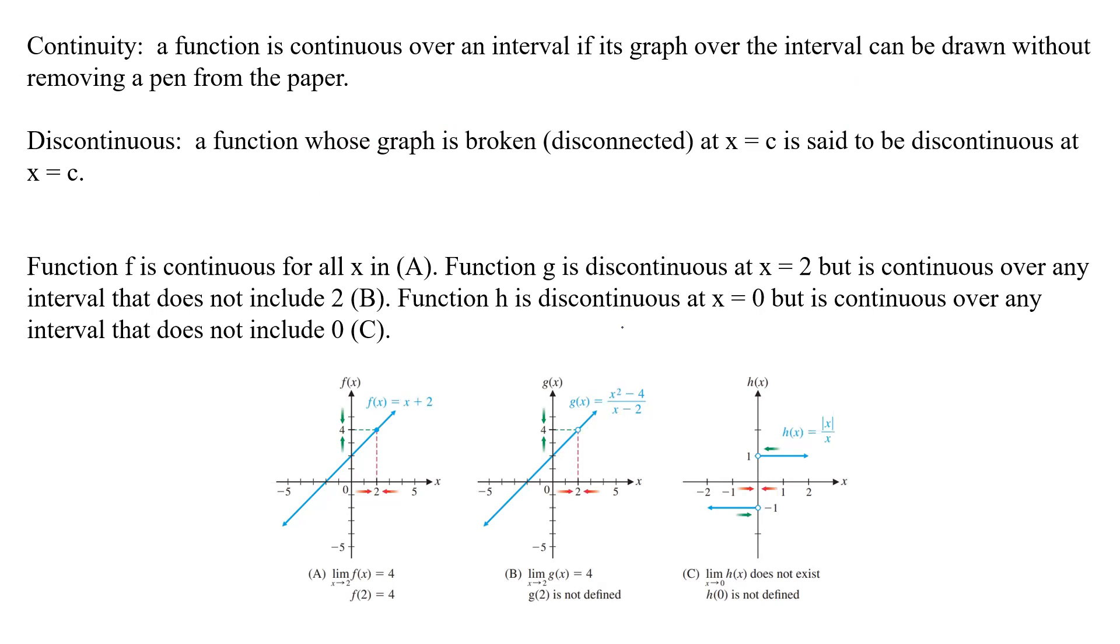So if we're looking at the graphs down here, in A, we have a graph that is continuous for all x because no matter where we start here on the left and go all the way across, we can keep our pen down and we have a function that works. It's continuous.